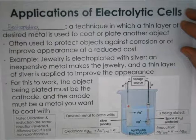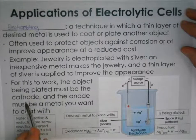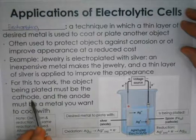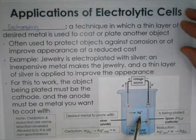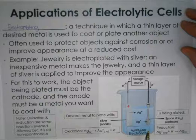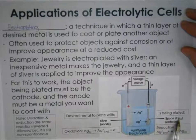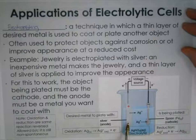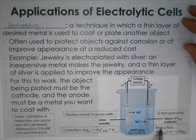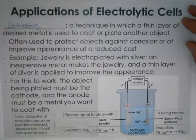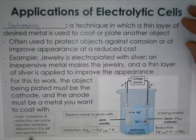In the silver-plating example, an inexpensive metal makes the jewelry, and a thin layer of silver is applied to improve appearance. For electroplating to work, the object being plated must be the cathode, because that's where we see the depositing of a solid. The anode has to be the metal you want to coat with, so its ions move into solution and plate the object. In this example, a spoon made of iron is being silver-plated, with the anode made of silver. At the anode, oxidation occurs: solid silver becomes silver ions; at the cathode, reduction occurs: silver ions form solid silver.